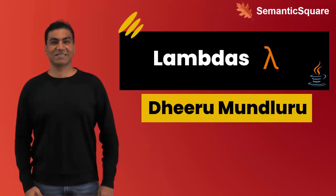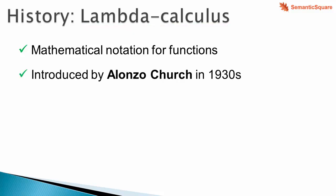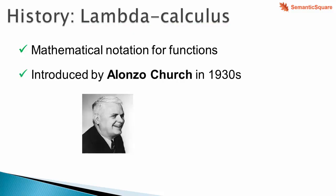Before lambdas, anonymous classes were used to perform the similar task of passing around functionality. In this lecture we will learn about the lambda syntax and discuss how it is different from anonymous classes. First, a brief look at the history concerning lambdas: lambdas come from lambda calculus, which is a mathematical notation for functions, and it was introduced in the 1930s.